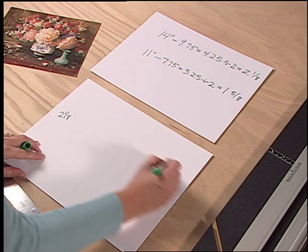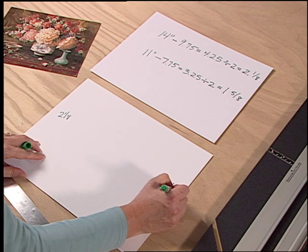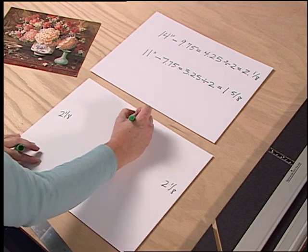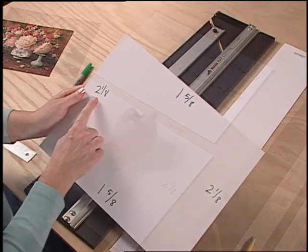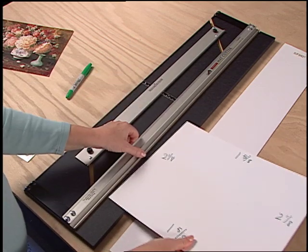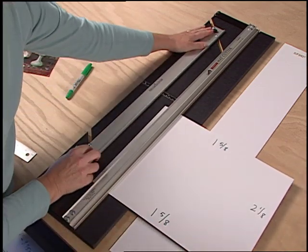After the calculations are done, transfer these border sizes to the back of the mat blank you intend to cut the opening into. Now using the numbers that you've transferred, set the mat guide accordingly and cut the four sides.